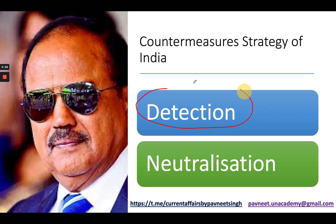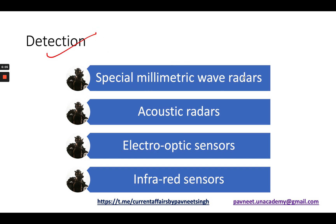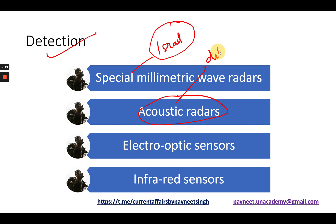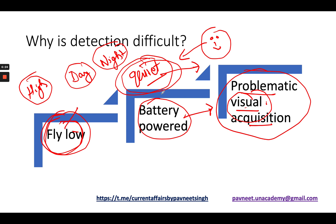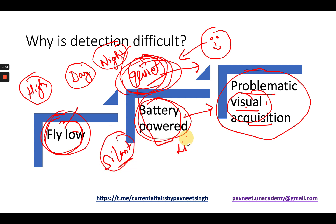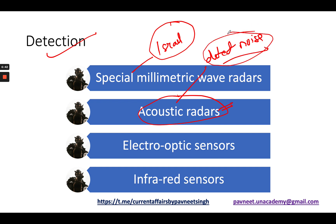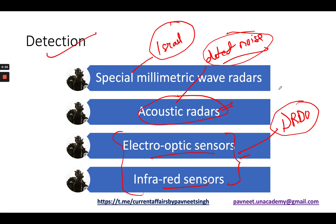What countermeasures can India take? There are two: detection and neutralization. For detection, we need to focus on four things. Number one, we can use special millimetric wave radars — these are created by Israel and can be procured from them. Number two, we can buy acoustic radars, which help detect noise. Even though drones are quiet, they are not silent — they do make a little noise, and acoustic radars can detect that and prevent drone entry. Numbers three and four are electro-optic sensors and infrared sensors, both already being produced by DRDO — we just need to deploy them at the Indo-Pakistan border.